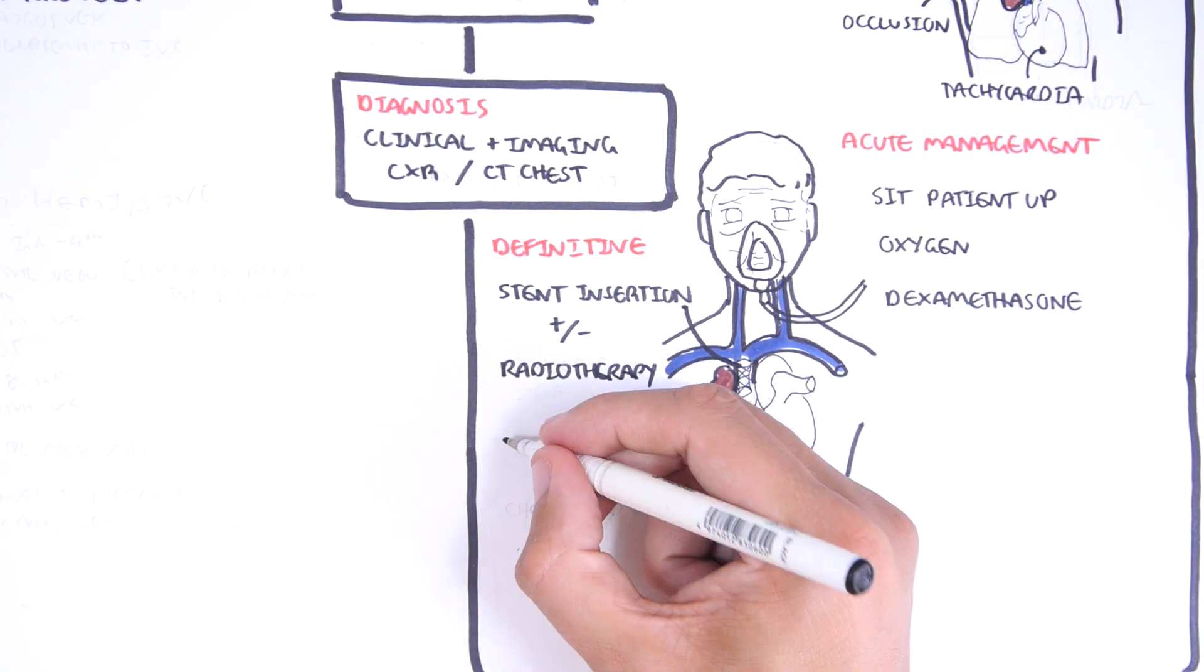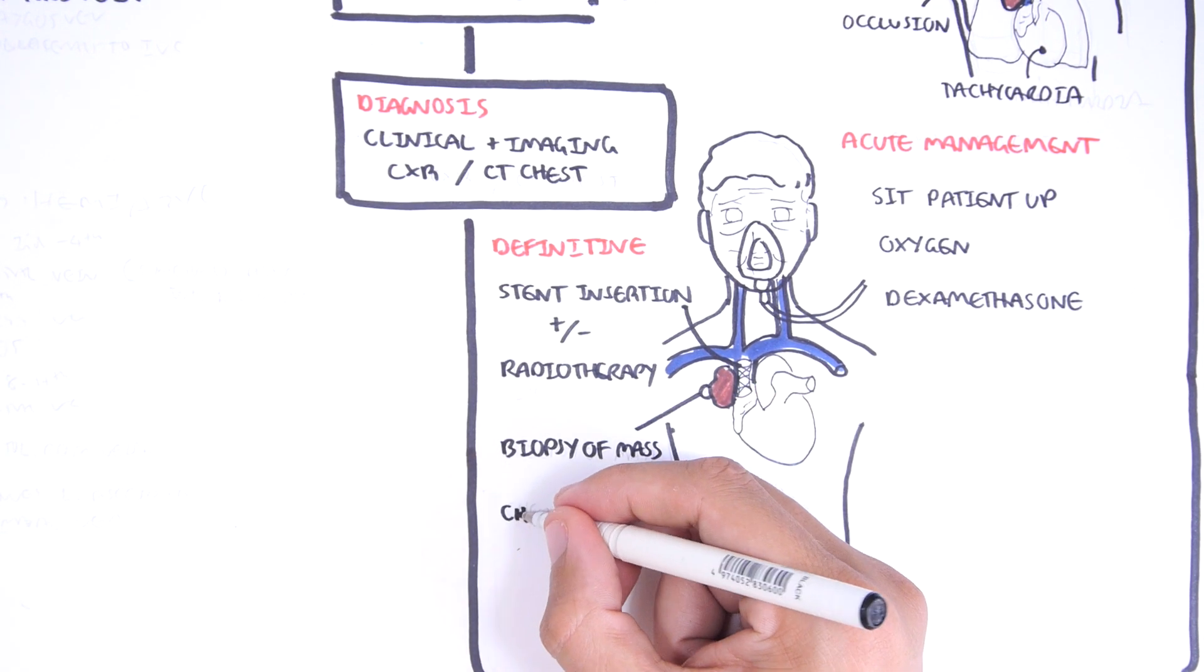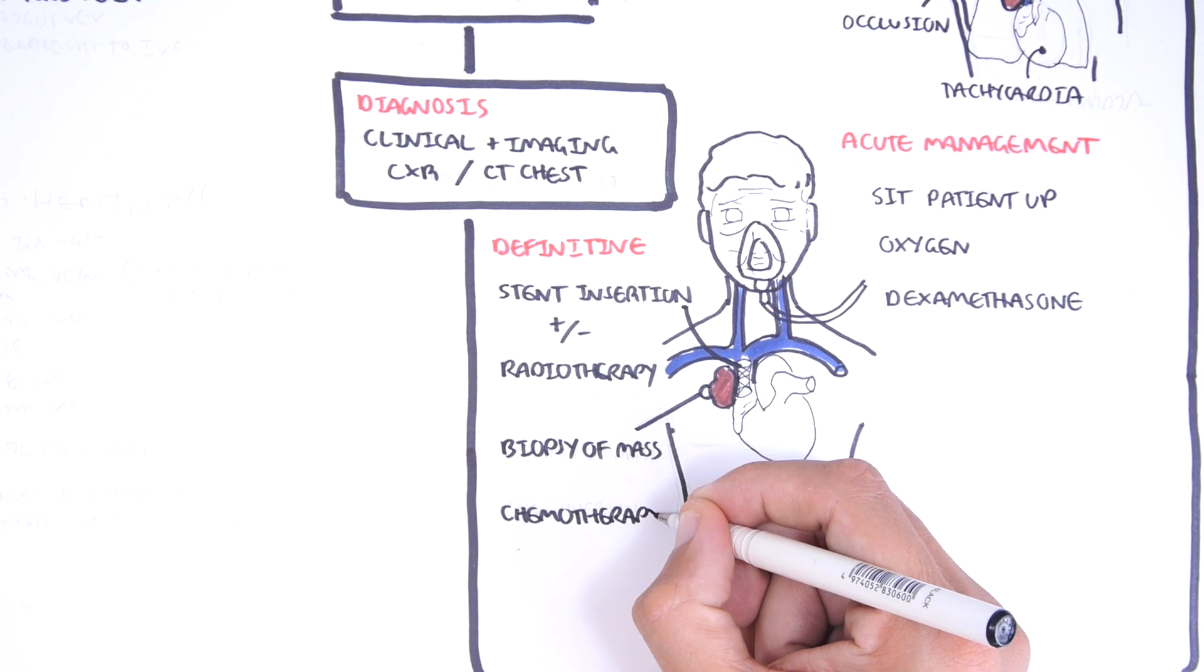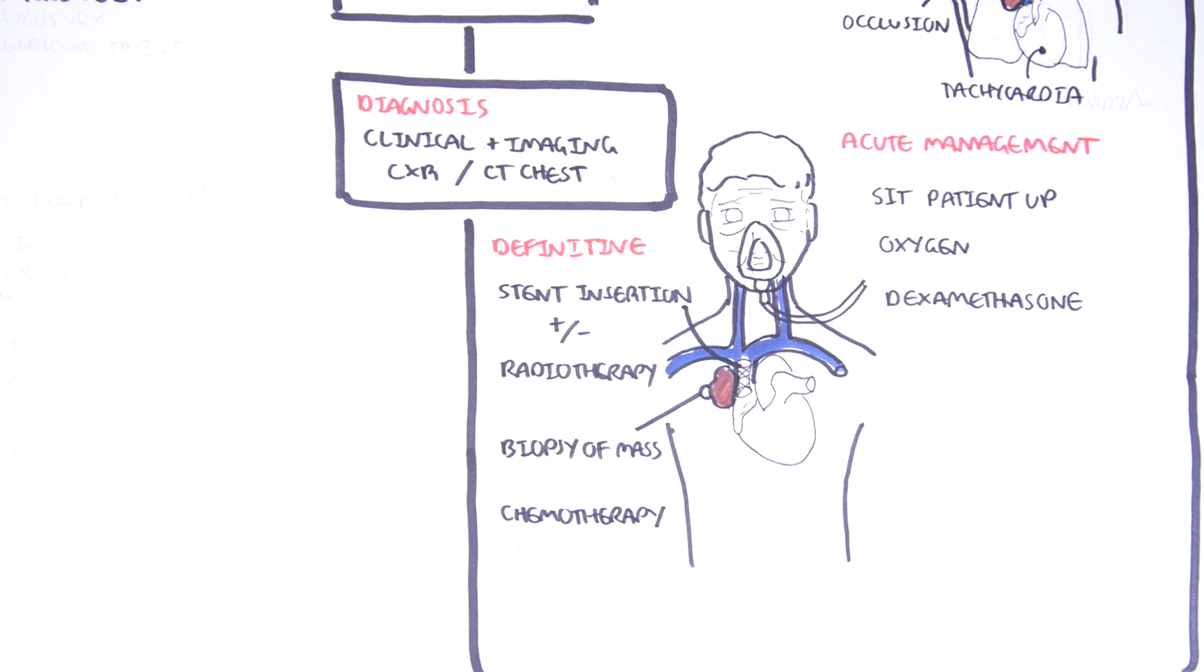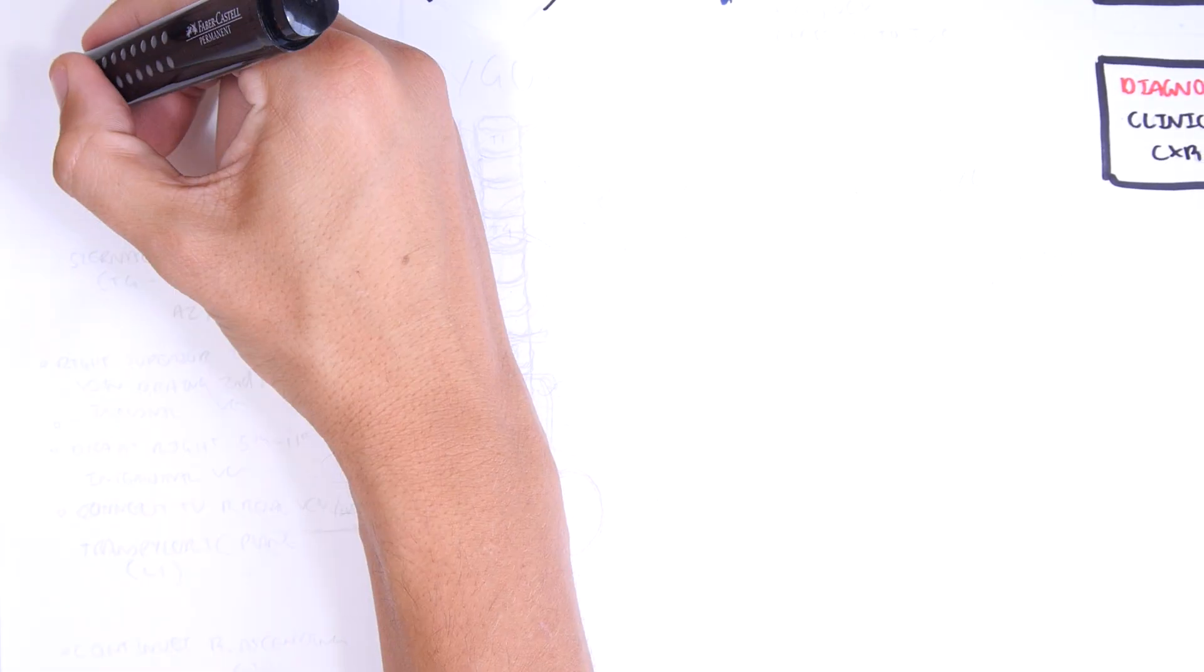If it is a suspected malignancy causing the superior vena cava obstruction, a biopsy will be taken to confirm the type of cancer, followed by chemotherapy. One of the main tributaries of the superior vena cava is the azygos vein.